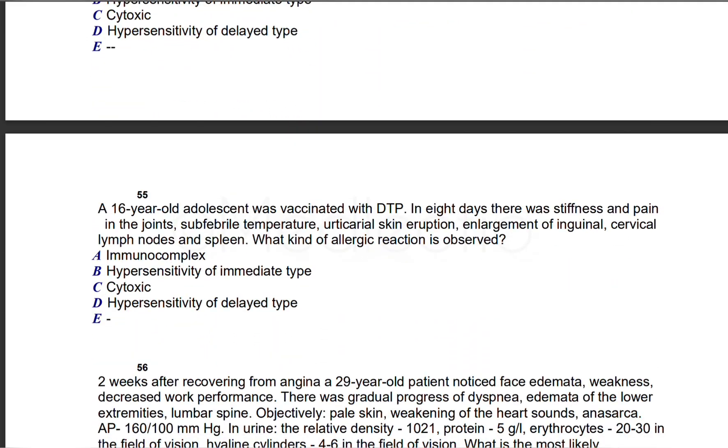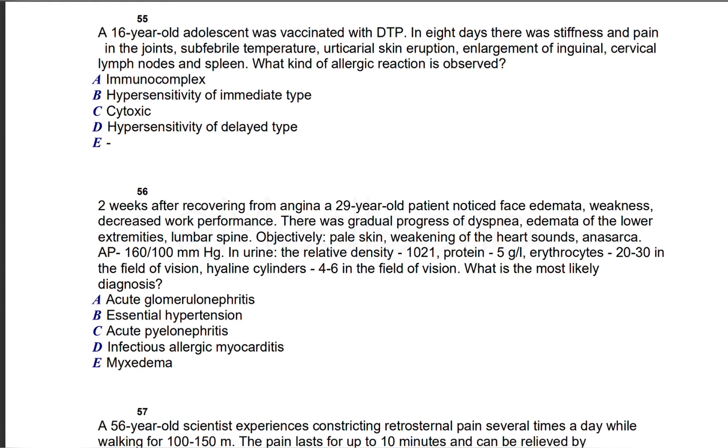Question 56: two weeks after recovering from angina, a 29-year-old patient noticed face edema, weakness, decreased work performance. There was gradual progress of dyspnea, edema of lower extremities and lumbar spine, pale skin, weakening of heart sounds, anasarca. Proteinuria 5 g, erythrocytes 20-30, hyaline cylinders 4-6. So proteinuria, hematuria, hyaline casts—definite kidney problem. Blood pressure 160/100, so hypertension.